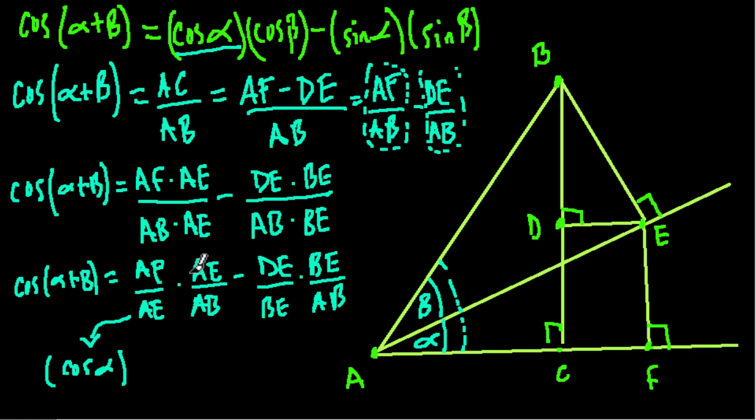Next, AE over AB. What's that? Well, here's AE, here's AB, and here's angle beta. So that's the cosine of angle beta. Why? Because angle beta is right here, AE is the adjacent side, and AB is the hypotenuse. And if you remember our trig functions, SOHCAHTOA, cosine equals adjacent over hypotenuse. So that's the cosine of beta.